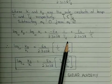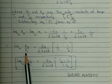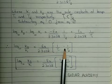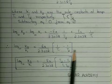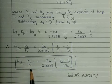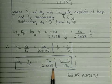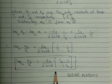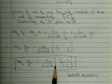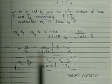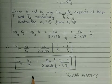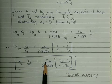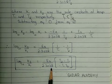Rearranging, we get: log₁₀ (K2/K1) equals Ea upon 2.303R times (1/T1 minus 1/T2). Remember, T2 is the higher temperature and T1 is the lower temperature, which is why we get T2 minus T1 in the denominator. This equation gives the relationship of variation of rate constant with temperature and can also be used to determine the activation energy of a given reaction.